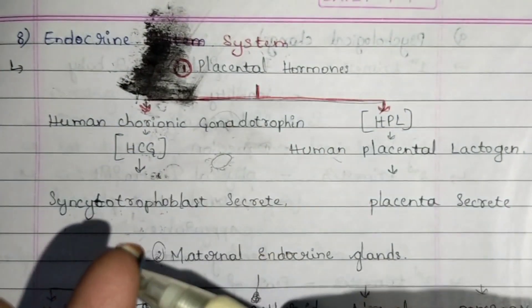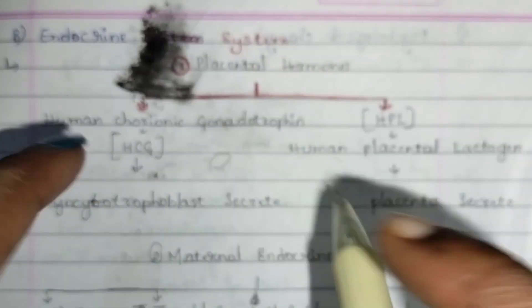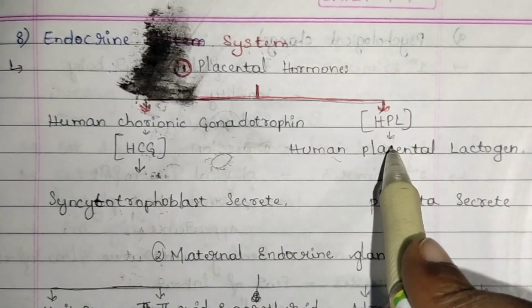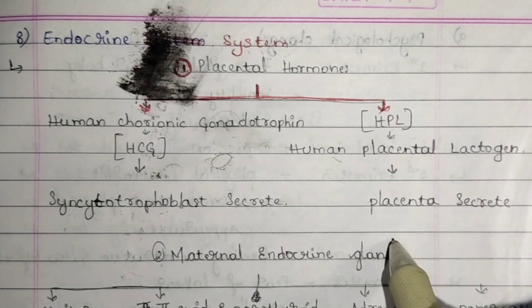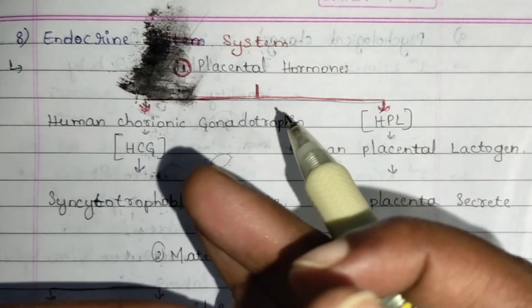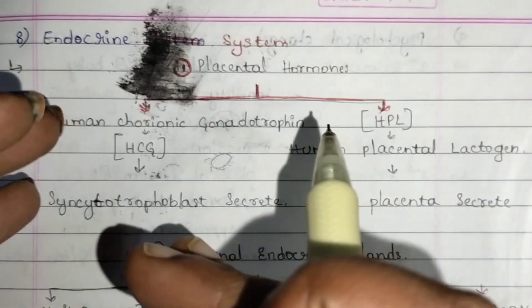Next, HPL hormone. This is used in placental secretion — it helps in secreting glucose. That is the main function of HPL: it helps in the secretion of glucose and provides energy in transporting things.